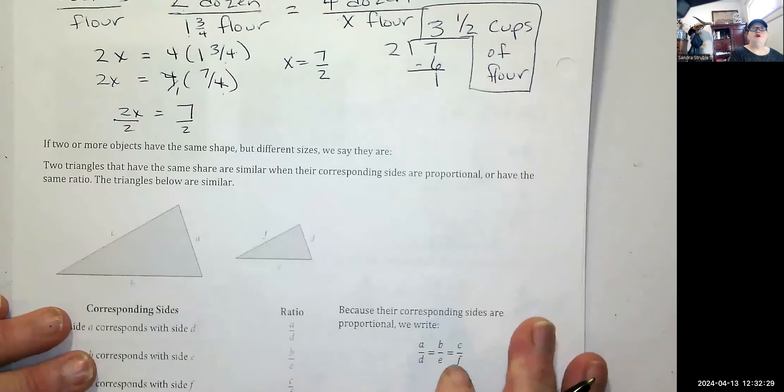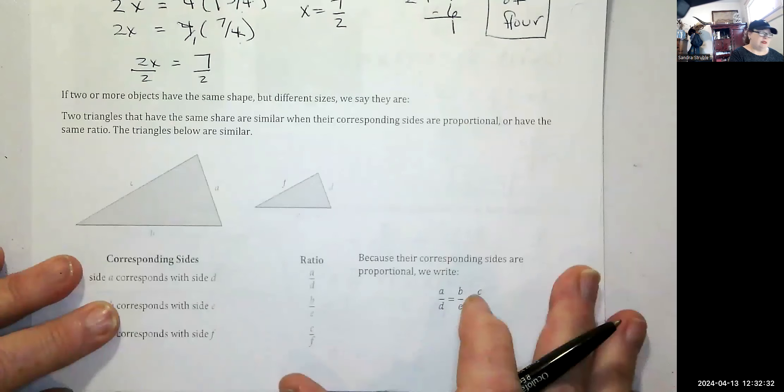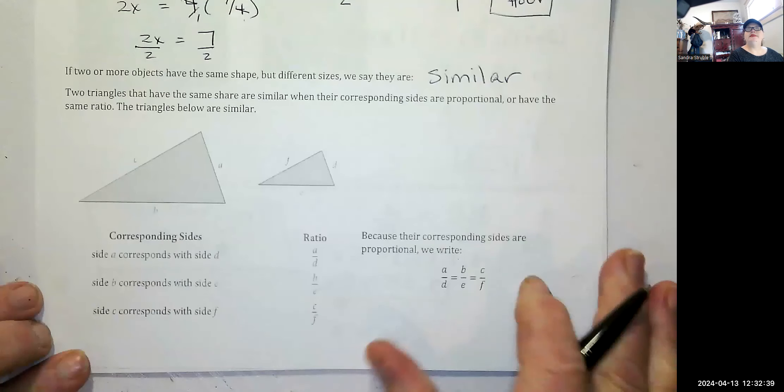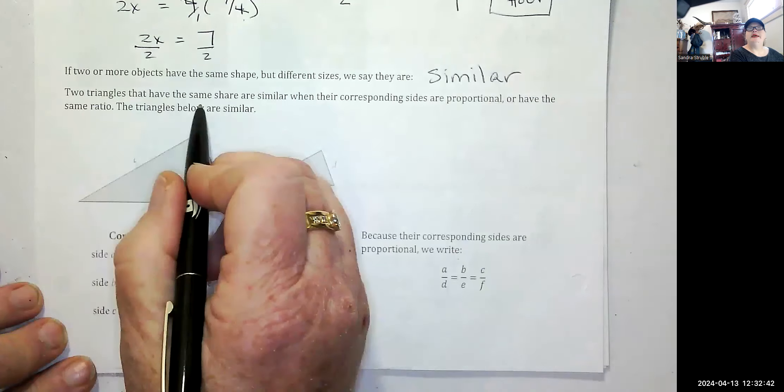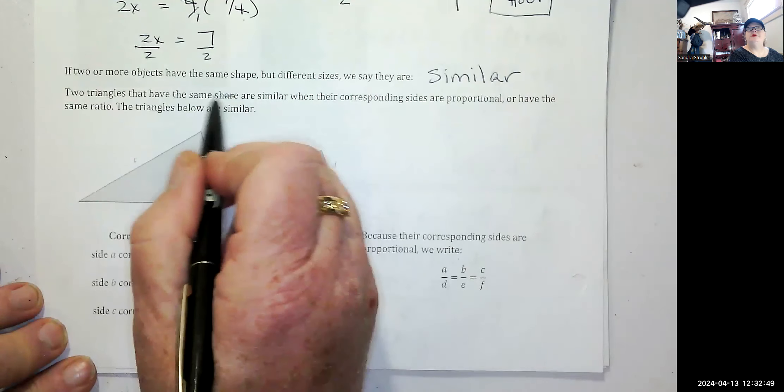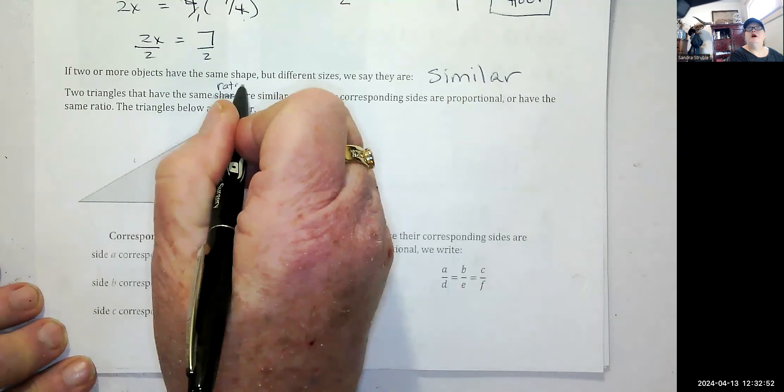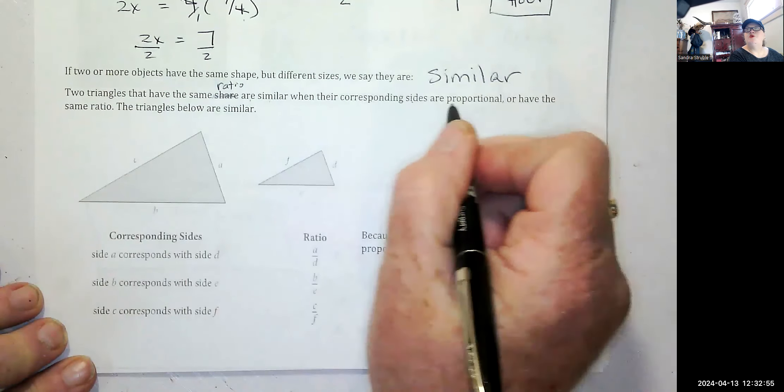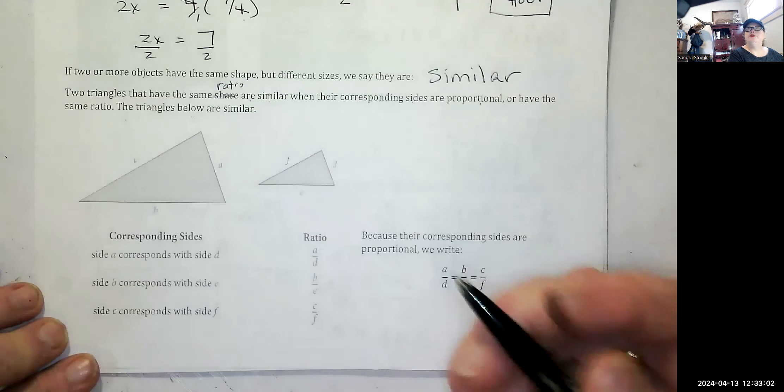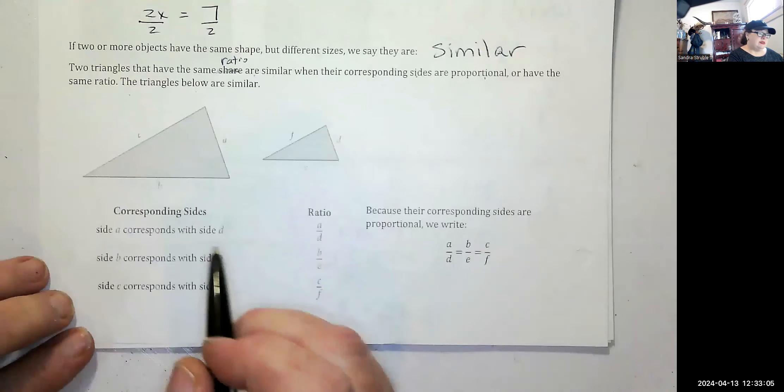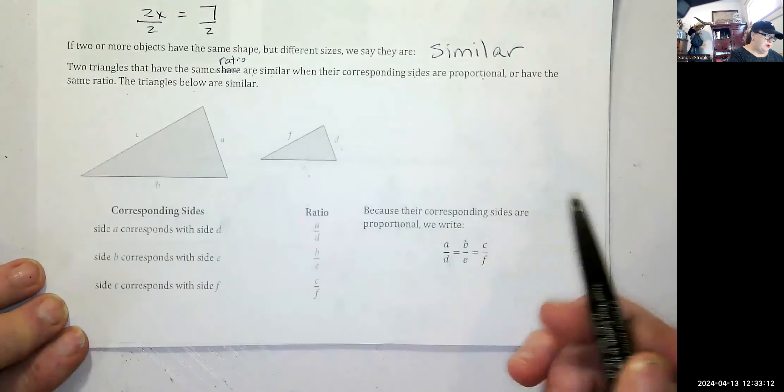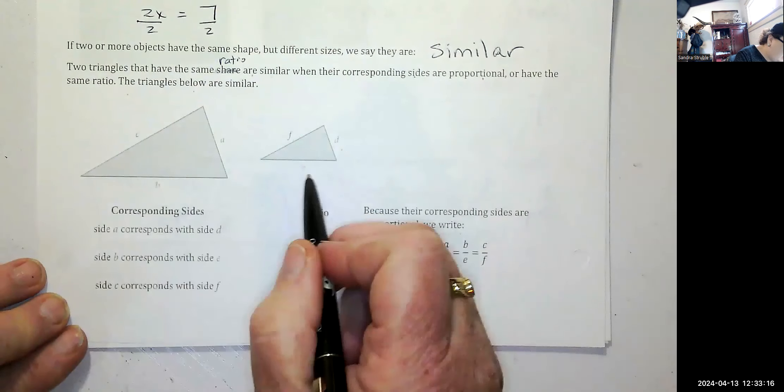If two or more objects have the same shape but different sizes we say they are similar. Two triangles that have the same ratio are similar when their corresponding sides are proportional, or have the same ratio. The triangles below are similar because they're telling us they are. So C is to F as A is to D as B is to E.